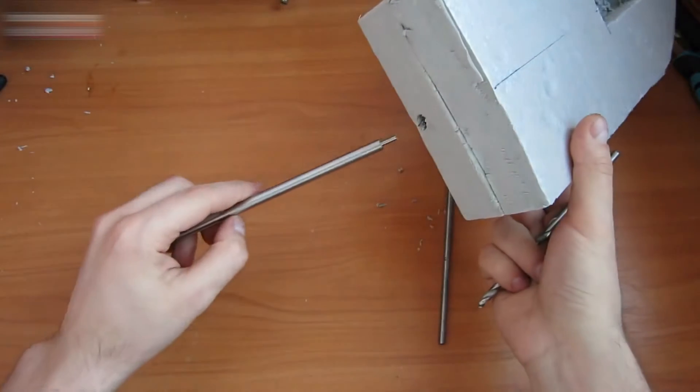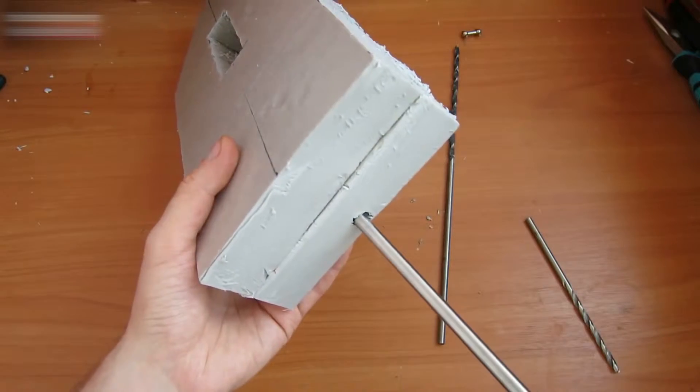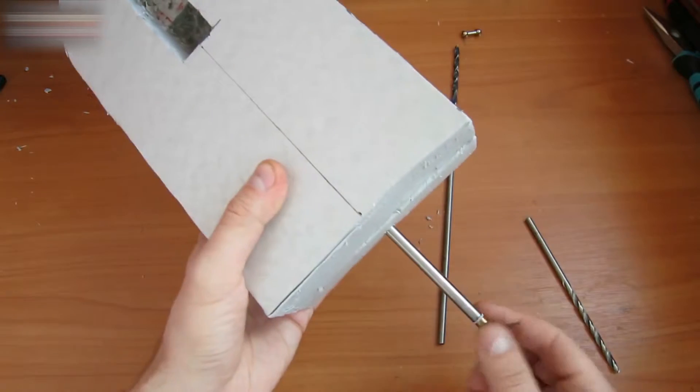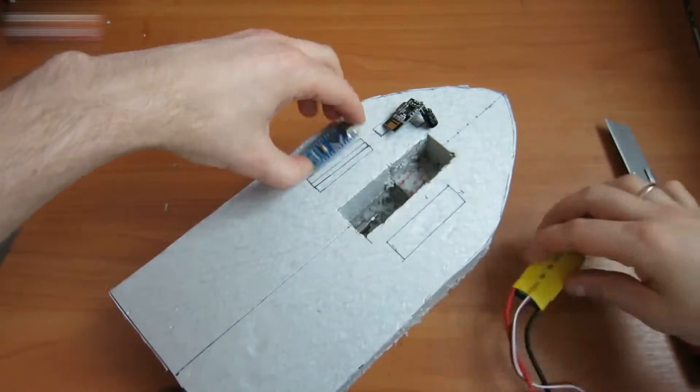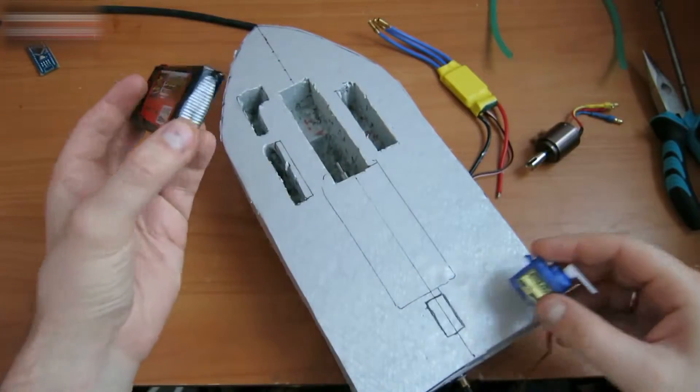Now, the tube fits tightly. This is a very nice property of polystyrene. Make holes for the radio equipment. We also need to make cutouts for the battery and servo.